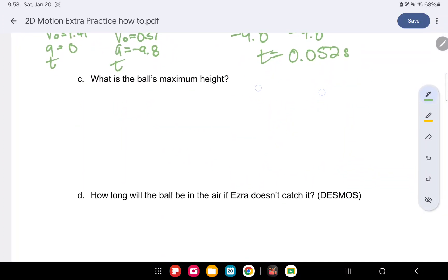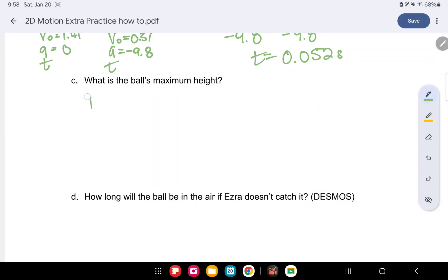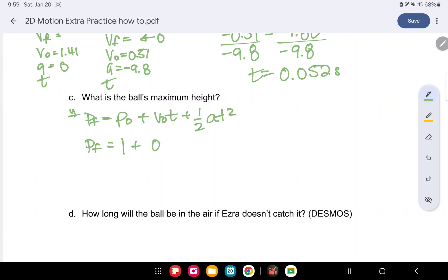Now what is the maximum height of the ball? So we'll use that time in our PF in our Y direction equation. V0T plus 1 half AT squared. So PF is what we're trying to find. Our P0 starts at, oh, it starts at 1 actually. Our V0 is 0.51. And we now know our time to be 0.052 seconds. plus 1 half negative 9.8 gravity times 0.052 squared.